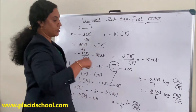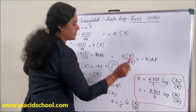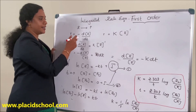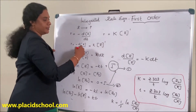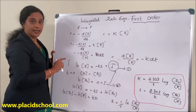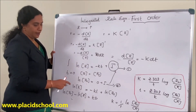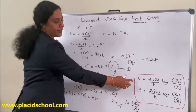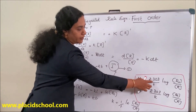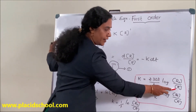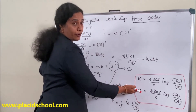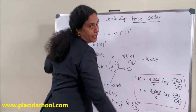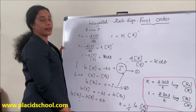This is the derivation of the integrated rate expression for a first order reaction — a very important derivation. For reaction R gives P, first express the differential rate equation and integrated rate equation, then equate them. After rearranging and integrating, you get i equals ln R₀. Substituting and rearranging gives the final equation: K equals 2.303 divided by t times log of initial concentration divided by final concentration. For calculating time, rearrange to: t equals 2.303 divided by K times log R₀ by R.